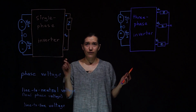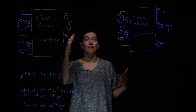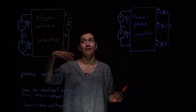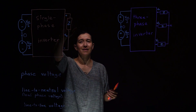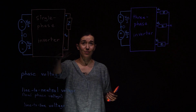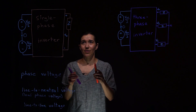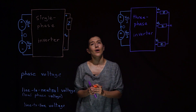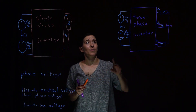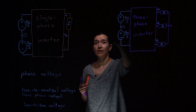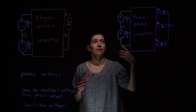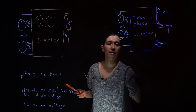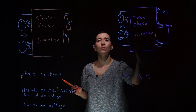Phase voltage is the voltage at the output relative to the zero on the input side. For the single-phase inverter, this is simply VO, assumed to be relative to zero. For the three-phase inverter, this is VA, VB, and VC relative to the input ground — so those are already labeled relative to that zero reference on the input side.